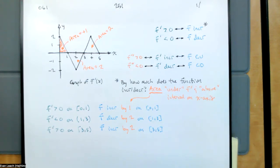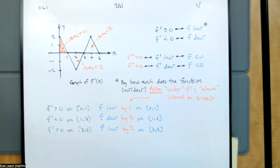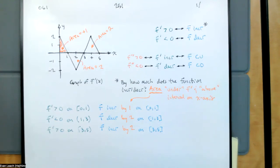If I had just said f increases on the interval from 0 to 1, or f is increasing on the interval from 0 to 1, I would have left out the endpoints. Because I said 'by how much,' I wanted to be super pedantic, and that allowed me to include the endpoints. This is not an amount of pedantry I would impose upon my students — if you just said f increases by one on the open interval from 0 to 1, that's fine. The important thing is that f is increasing and you know how much it increases.